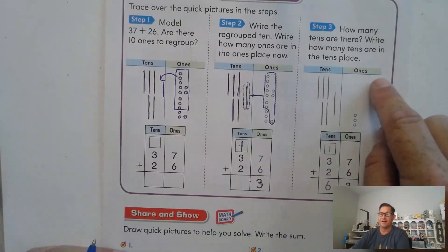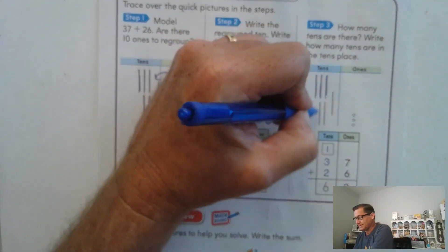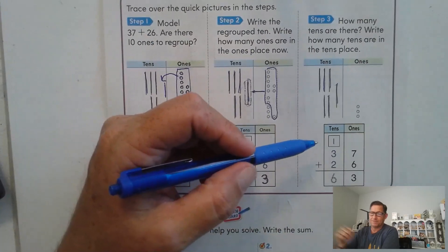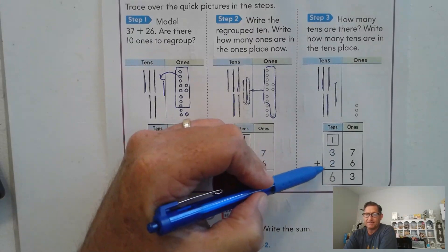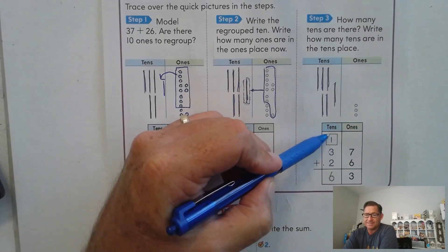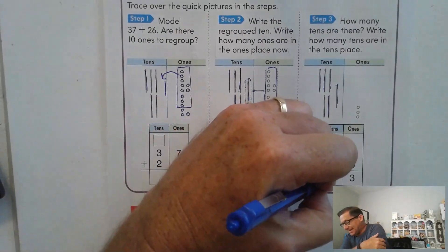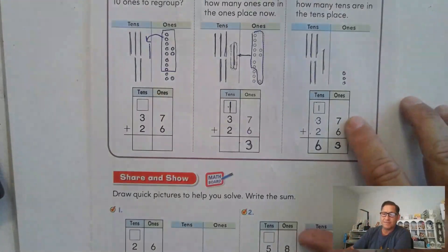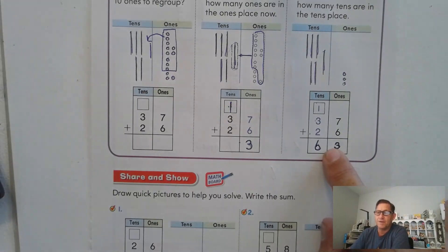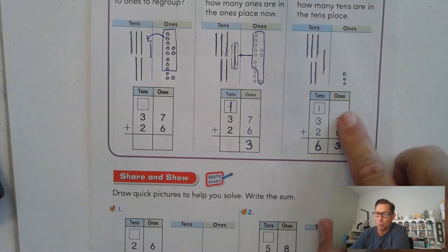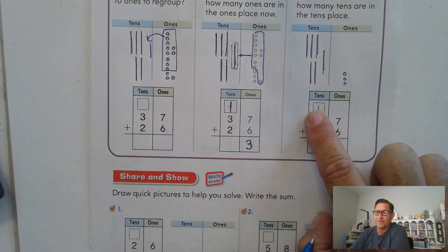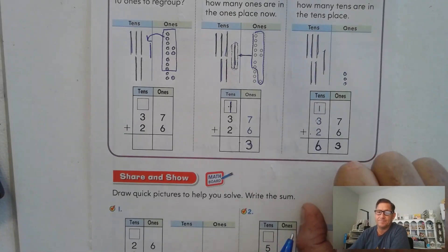And then finally, how many tens are there now? How many tens are in the tens place? So we traded 10 of the ones and that left us with six tens. Three from 37, two tens from 26 plus the regrouped 10 or the traded 10. So we have six tens and we have three ones. Now, some of you might look at this, just this part and said seven plus six, that's 13. Shouldn't I put 13 there? No, we can never write more than nine in the ones place. If we have more than nine, we're going to trade those extra ones as a 10. Anytime we have 10 or more, we're going to trade for a 10.